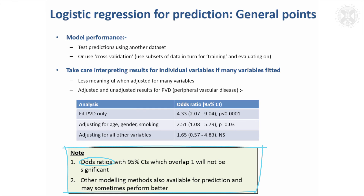And so it's only the last model — where we adjusted for absolutely everything — that our confidence interval now overlaps one. It's quite wide, and we've got a non-significant result to go with that. So that's just to show the analogy: we've got a similar analogy between confidence intervals and significant results, even when doing logistic regression.